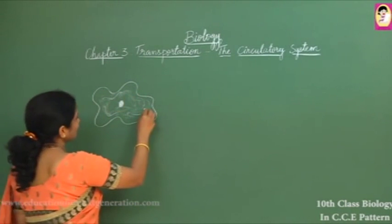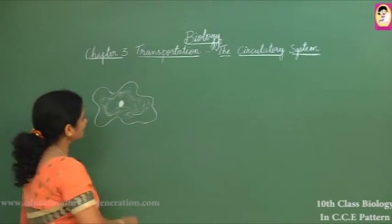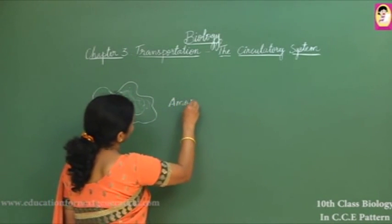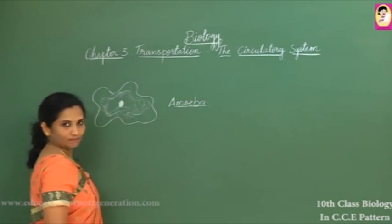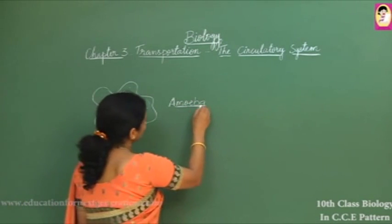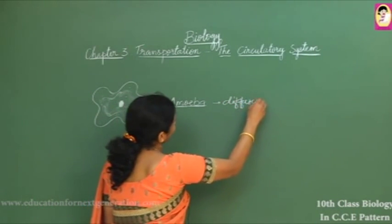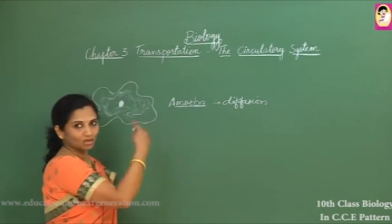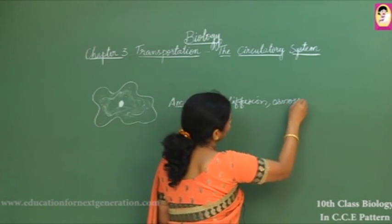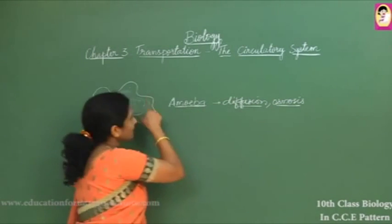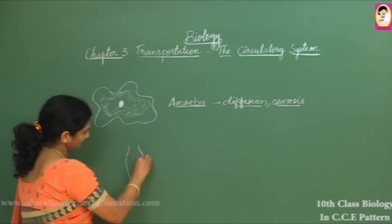Since amoeba is primitive in structure, a well-developed transport system is not required. Just by means of diffusion against the concentration gradient and osmosis, transportation of substances in their body is sufficient.